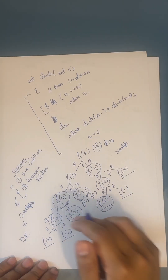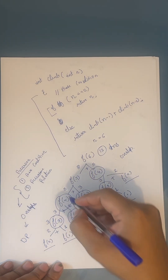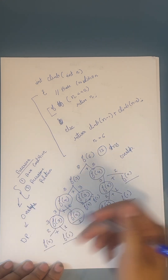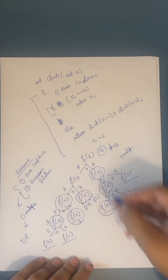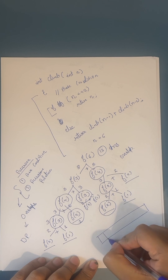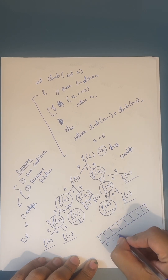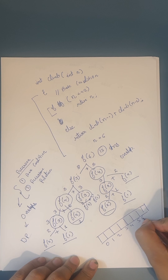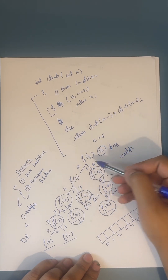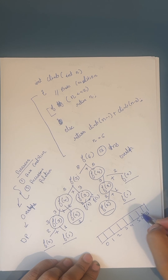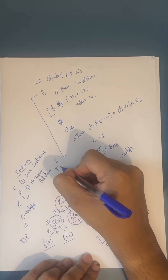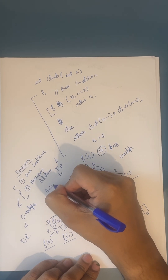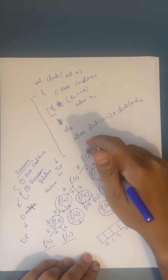How can it be solved by DP? Whenever you are calculating a function, you just check it in memory — we have done this in the past lecture. Suppose I have a memory array: 0, 1, 2, 3, 4, 5, 6, 7. While calculating f(6), I will check if f(6) exists or not. If not, I calculate f(5) — does it exist? No. Then f(4) — going top to bottom. This is actually the top-down approach.